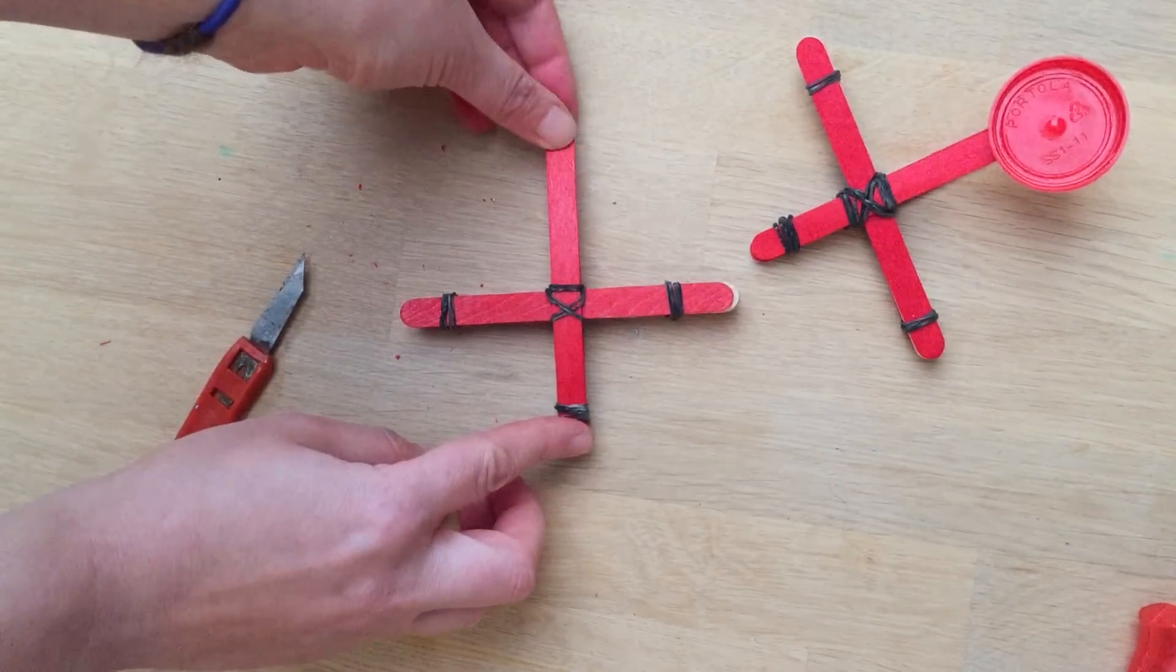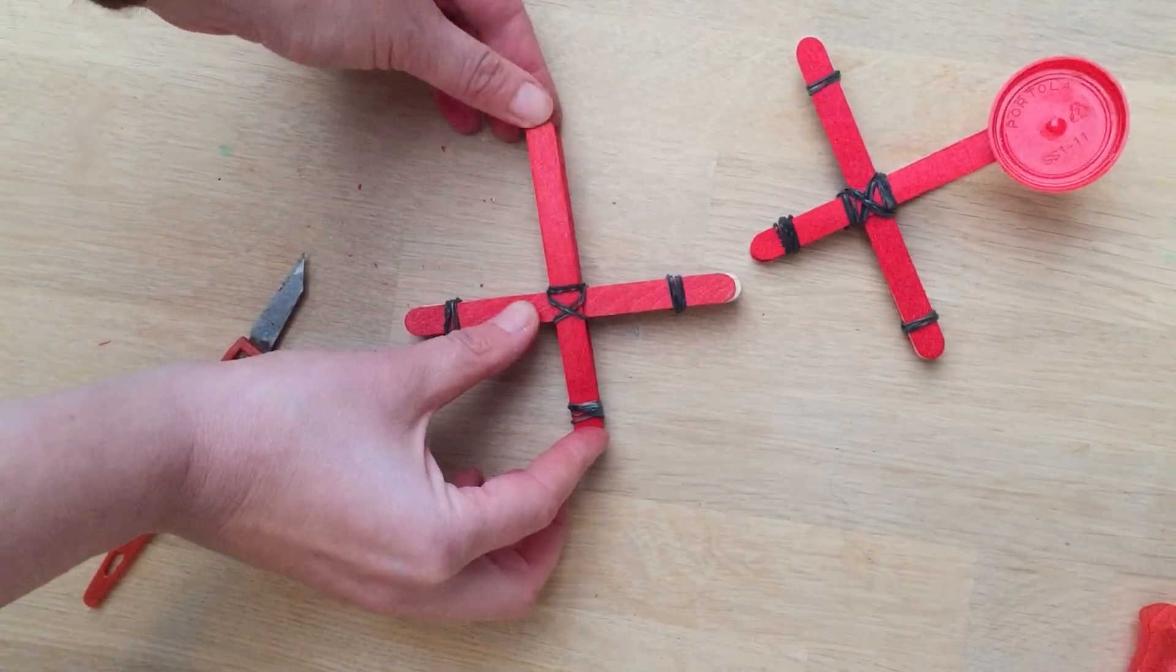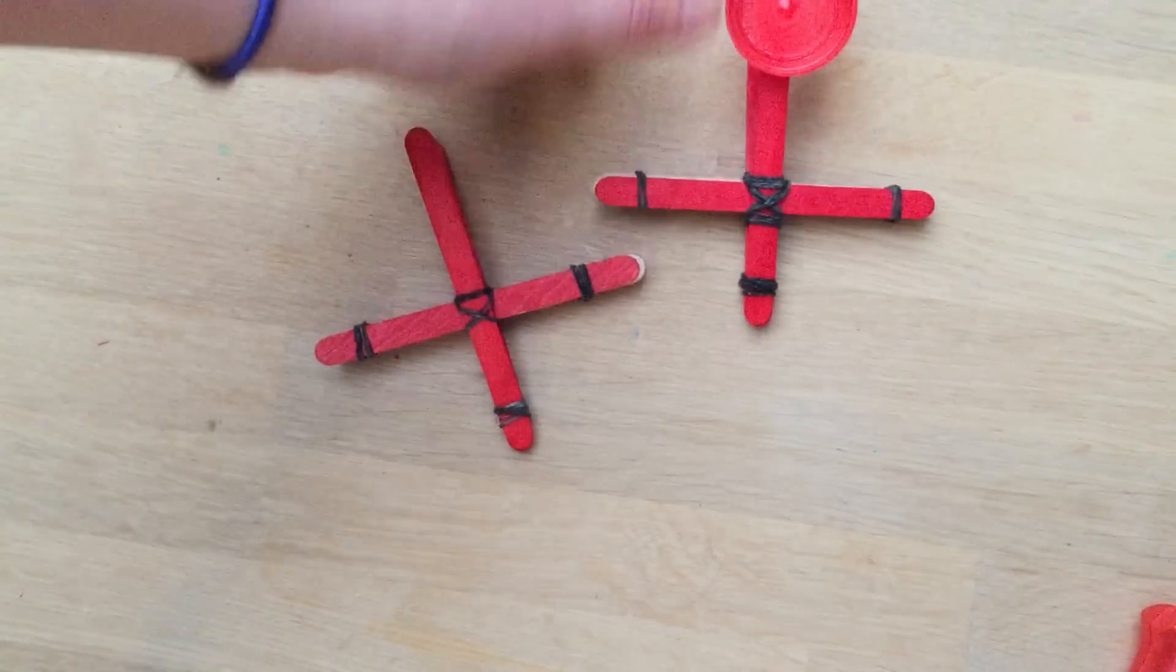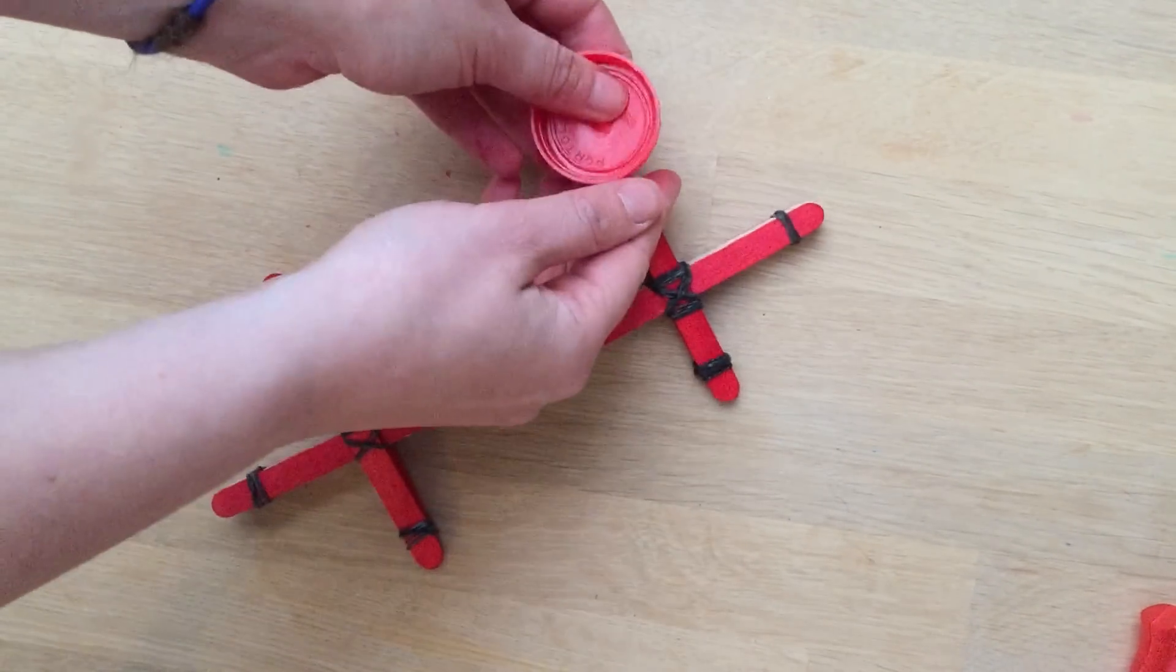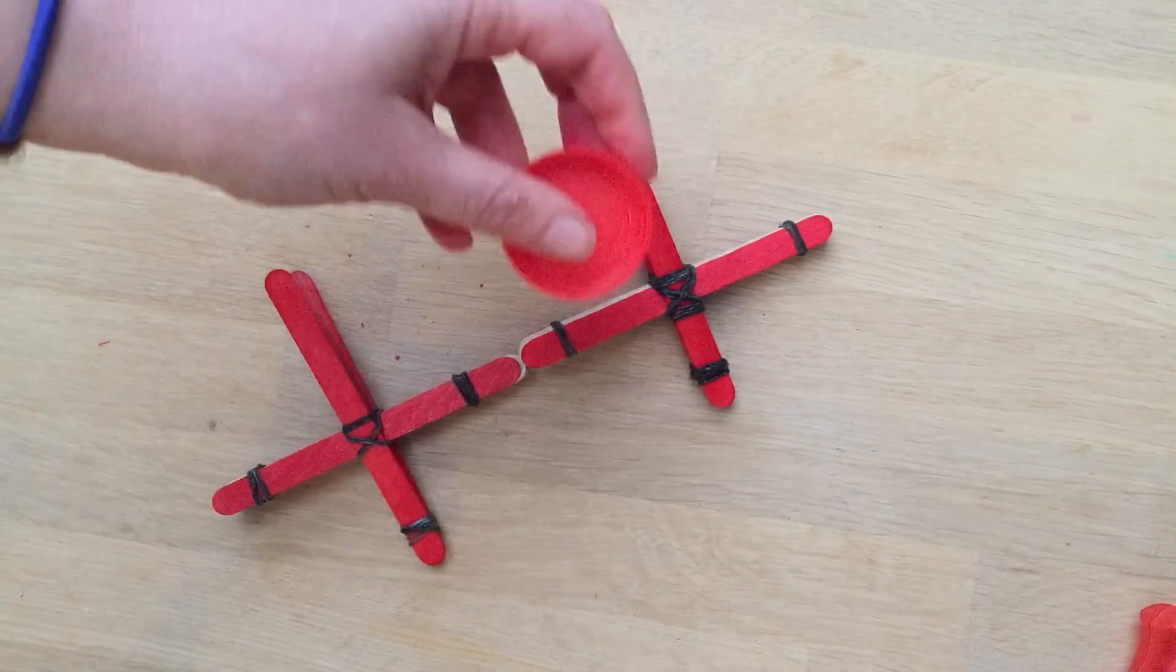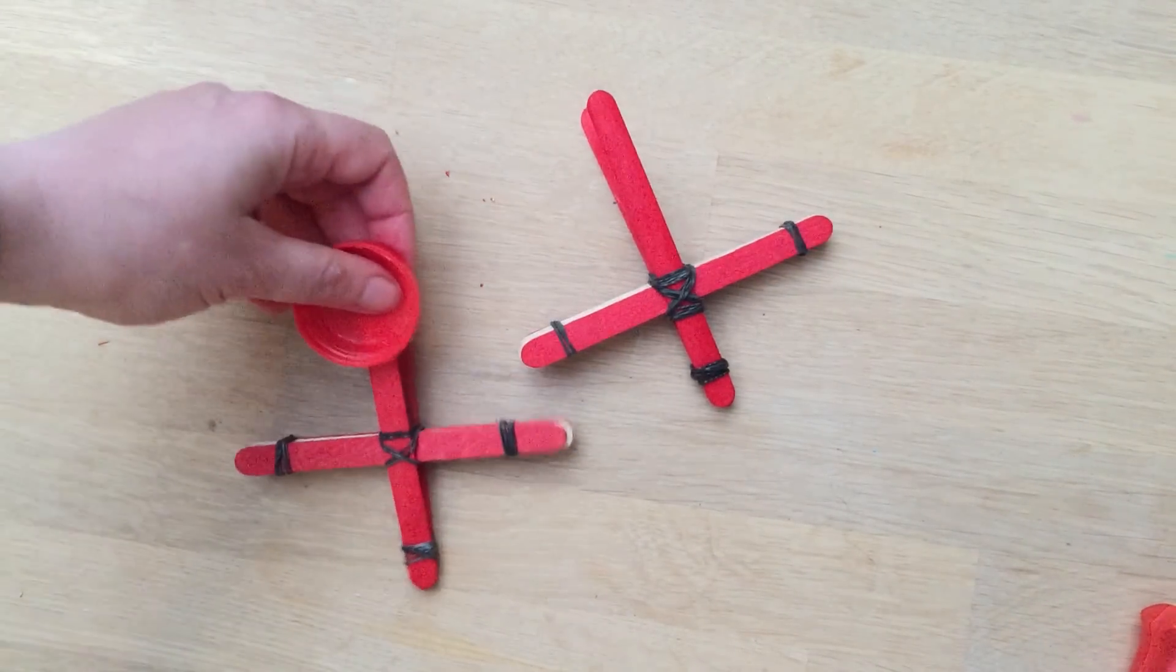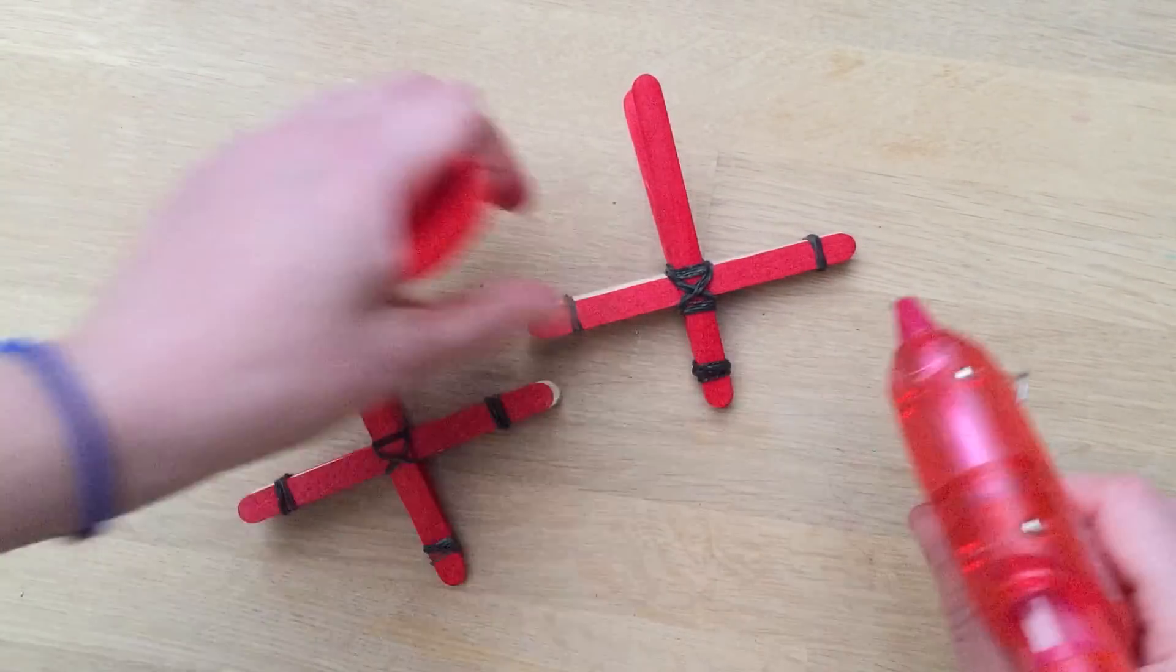So you've got your basic catapult now, and this will already work, especially with things like pompoms and marshmallows. And then the very last bit, just so you can make it bigger—I'm going to take it off here because I haven't glued it on yet just to show you—take a lid like this.